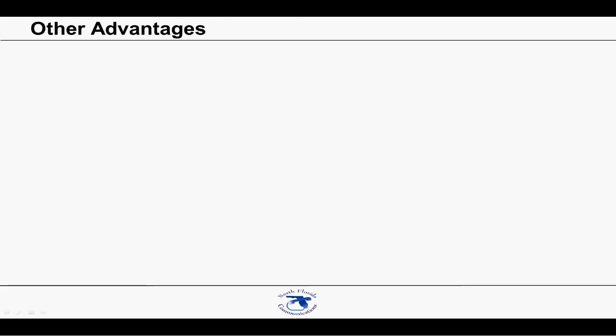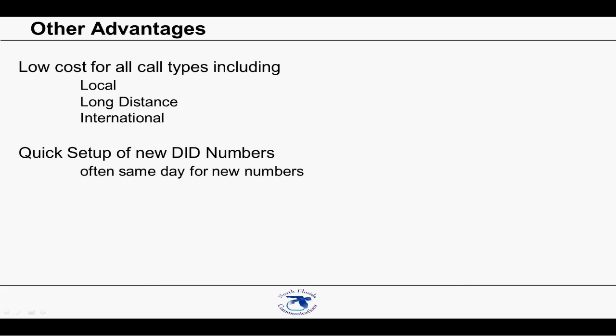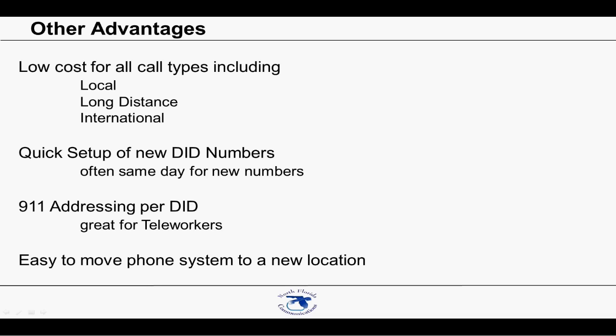Other advantages of SIP trunking include low costs for all types of calls, including local, long-distance, and international. New phone numbers can often be acquired the same day — there's no need to wait for the phone company to process your order, assign an installer who then has to work new cable pairs to your building, and then wait for your phone vendor to connect those lines. It's all done through programming. 911 numbers are assigned on a per-DID basis, so if you have remote offices tied back to your phone system, their 911 calls will be associated to the proper address. If you've ever had to move across the street or across town, with SIP trunking you'll just need to make sure you have an adequate internet connection working at your new location. Your technician will do a few programming changes and everything will be right back up.